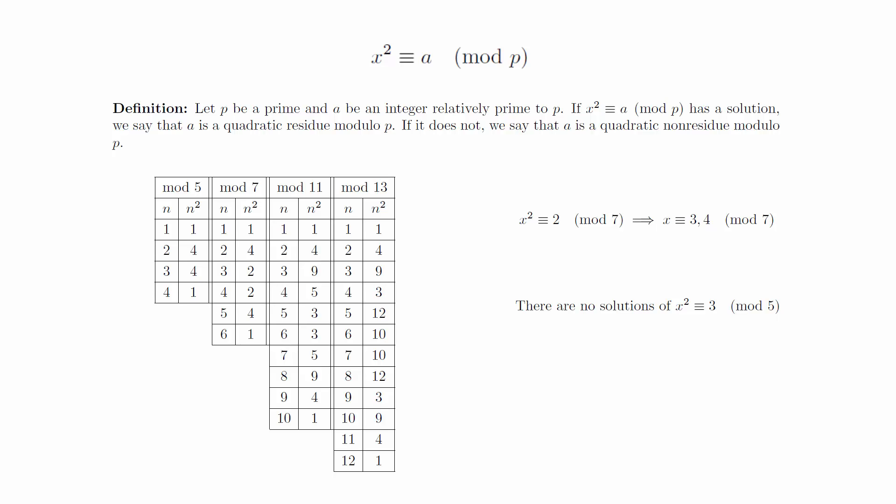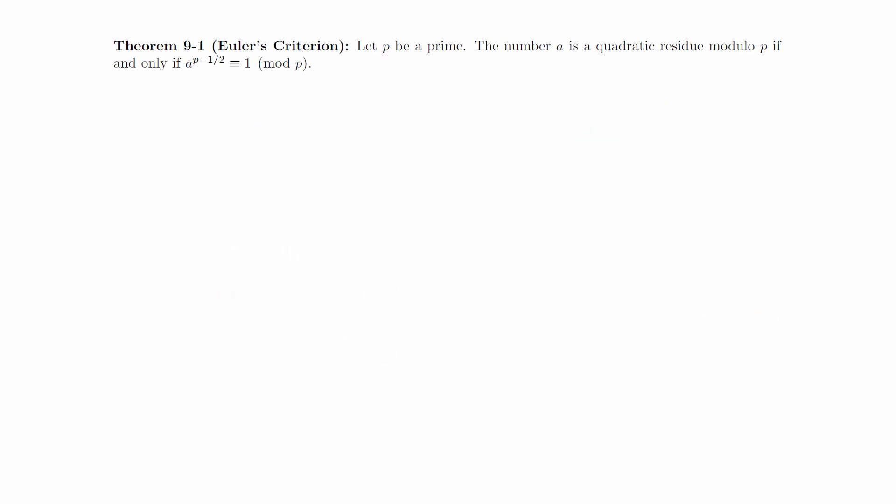It turns out that there is a method for determining whether a is a quadratic residue or non-residue modulo p that does not require us to calculate the full list of squares and search for the answers. Let p be a prime. The number a is a quadratic residue modulo p if and only if a to the (p minus 1)/2 is congruent to 1 modulo p.